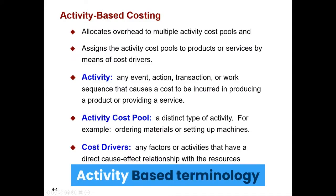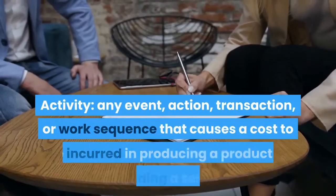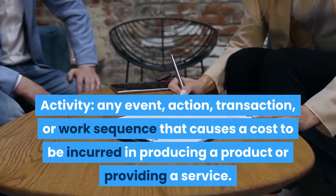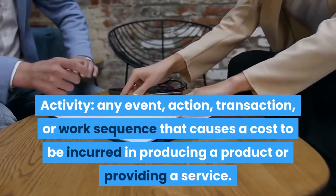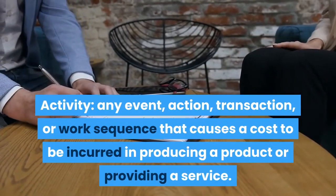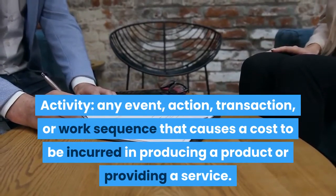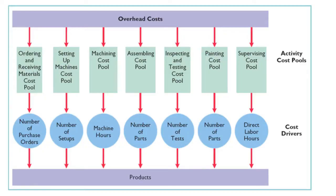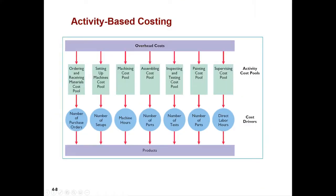Activity-Based Terminology. Activity: any event, action, transaction, or work sequence that causes a cost to be incurred in producing a product or providing a service. Activity-Cost Pool: a distinct type of activity — for example, ordering materials or setting up machines. Cost Drivers: any factors or activities that have a direct cause-effect relationship with the resources consumed.